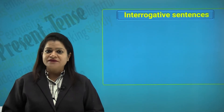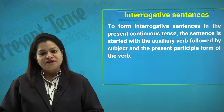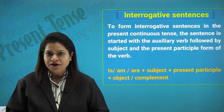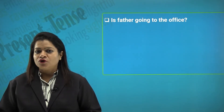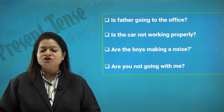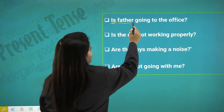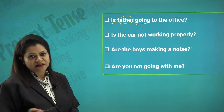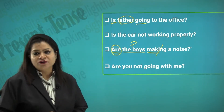To form interrogative sentences in the present continuous tense, the sentence is started with the auxiliary verb, which becomes the question word, followed by the subject and the present participle form of the verb. The structure is: is/am/are + subject + present participle + object or complement. Examples: 'Is father going to the office?' 'Is the car not working properly?' 'Are the boys making a noise?' 'Are you not going?' 'Are you not coming with me?'